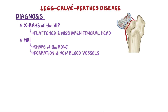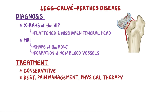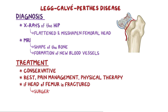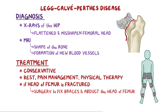Legg-Calvé-Perthes disease can sometimes resolve by itself over time, so treatment is mainly conservative, involving rest, pain management, and physical therapy to preserve joint mobility. If the head of the femur is very fractured, surgery may be needed to affix braces and abduct the head of the femur, to maintain its spherical shape as it regenerates.